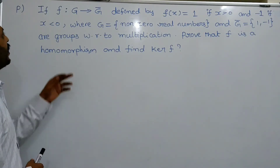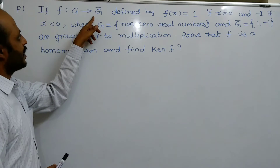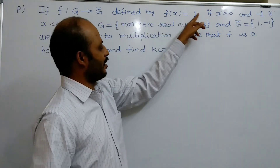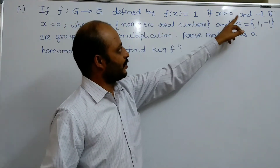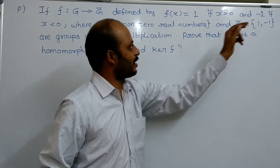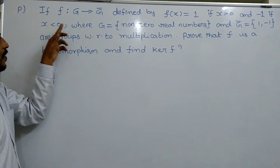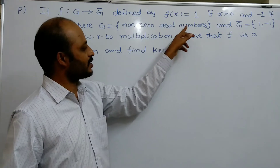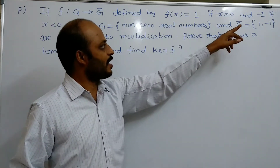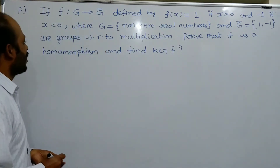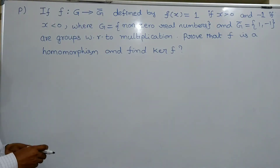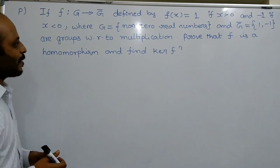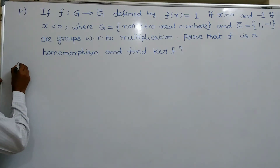First one: if f maps G to Ḡ defined by f(x) = 1 if x > 0, and f(x) = -1 if x < 0, where capital G is the set of non-zero real numbers and Ḡ = {1, -1}, are groups with respect to multiplication. Prove that f is a homomorphism and find kernel f.